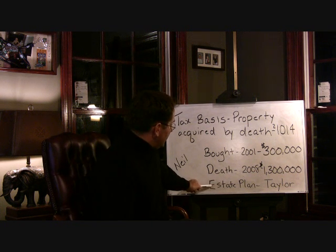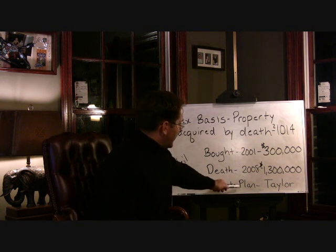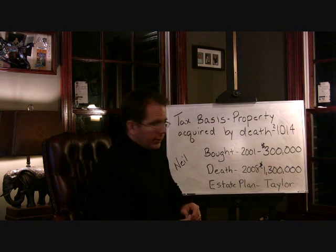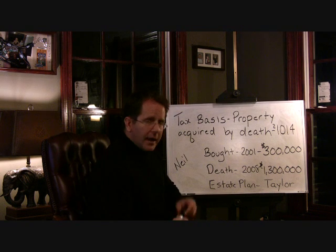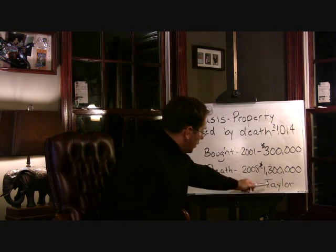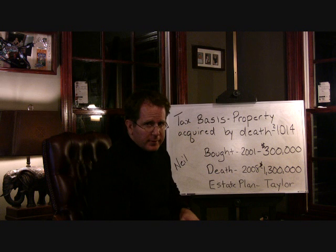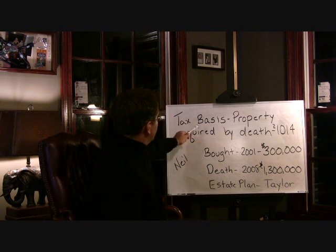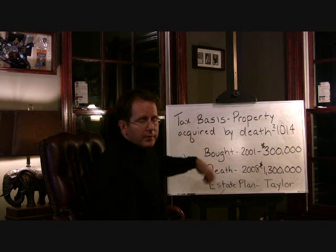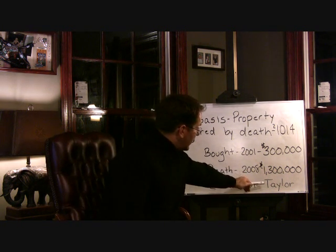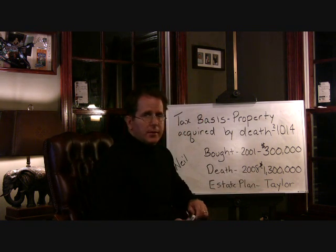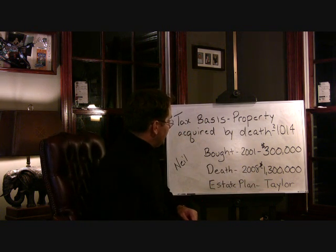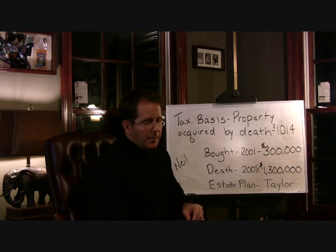But if we went to Neel's estate plan and he left it to his daughter Taylor, and Taylor then received that property after the estate distributed it to her — what is Taylor's tax basis in that property? Well, this is what we call the step-up in basis. Taylor now steps up to $1.3 million for purposes of her tax basis in the property.